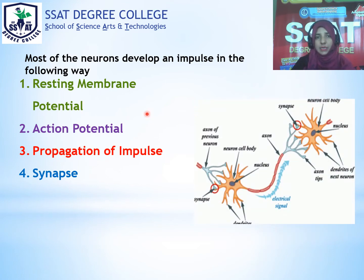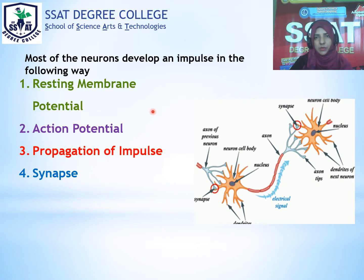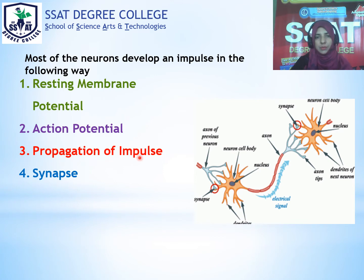Let's see a brief overview of each. Resting membrane potential means the neuron is at rest — not being used. The membrane of the neuron, its plasma membrane, is at rest — no message is being forwarded through the neuron. Potential means energy. When no message is being forwarded via the neuron, we call that resting membrane potential. When a stimulus comes and action begins in the neuron, that is called action potential. When that message then moves forward, as shown in the diagram moving ahead, that is called propagation of impulse. Synapse is the point where one neuron transfers a message to another neuron — the point marked in red.